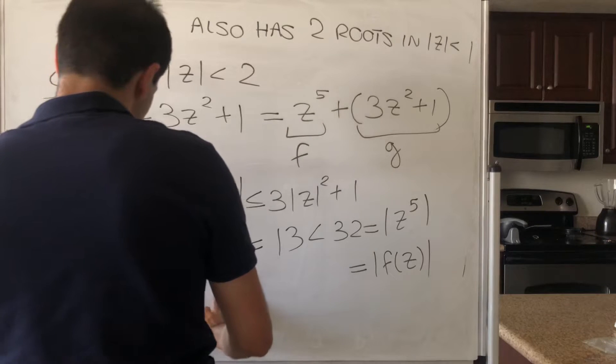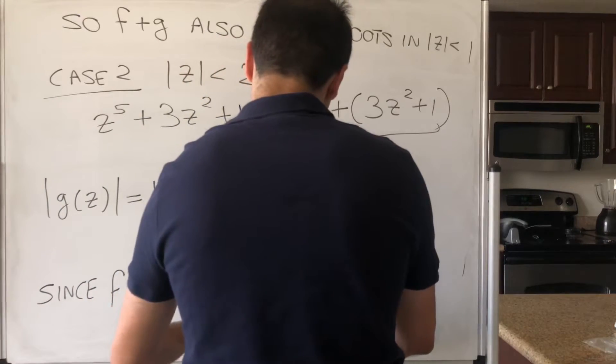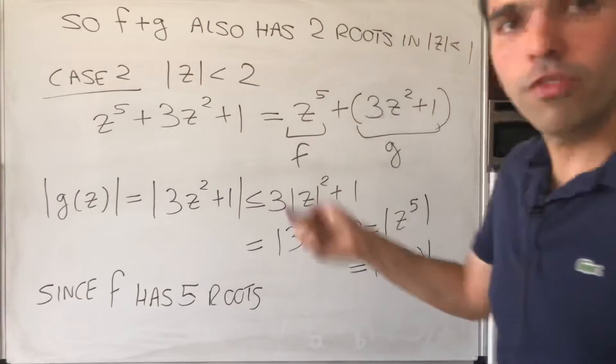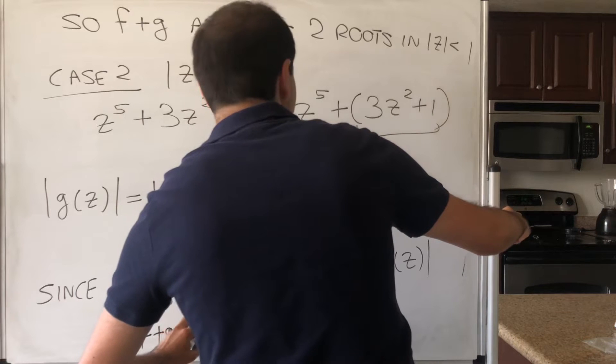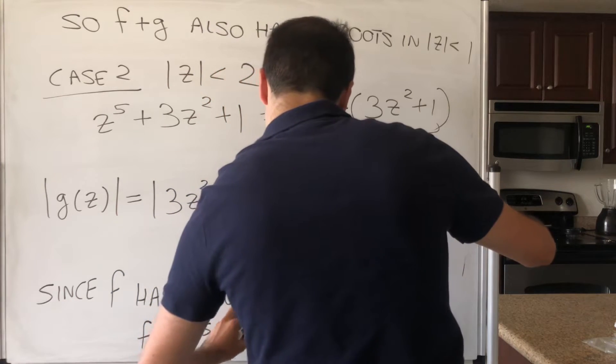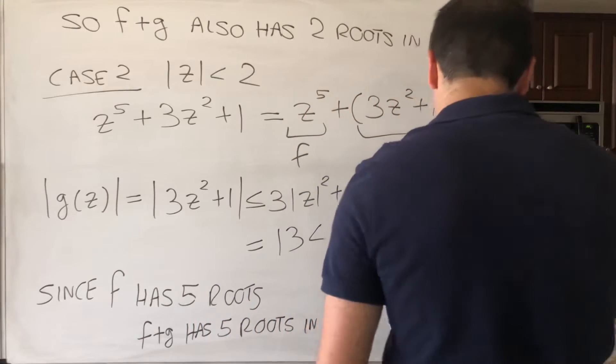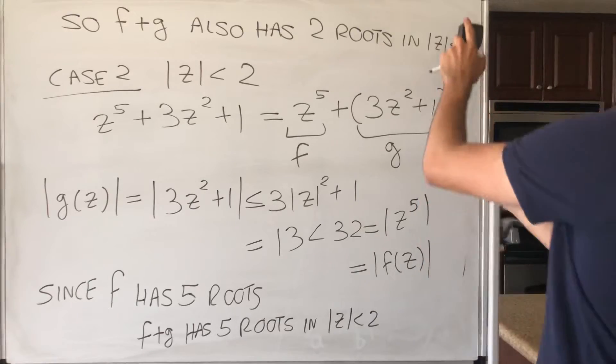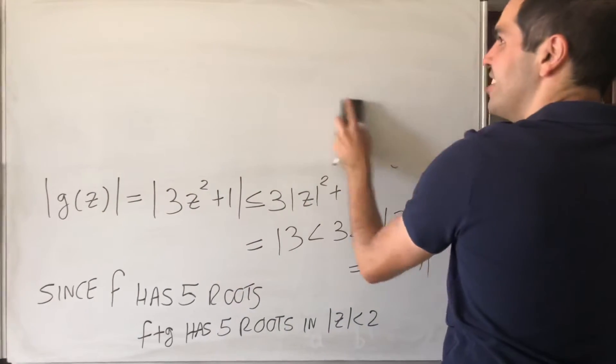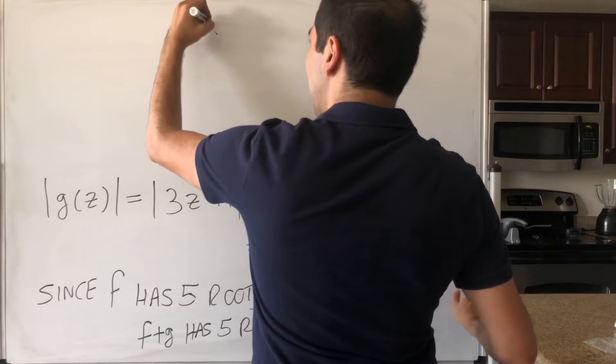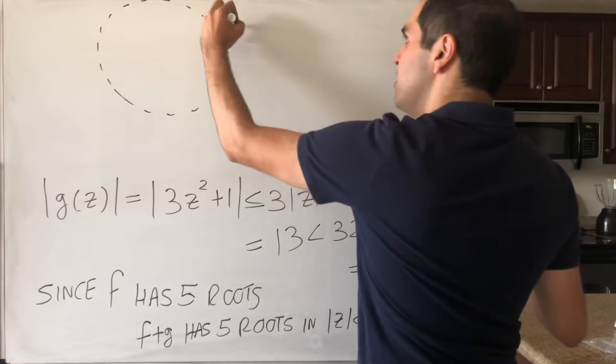So since F has 5 roots, technically just 0, but with multiplicity 5, we get F + G also has 5 roots in |z| < 2. Okay, so what have we found? And again, there is a little technicality which I'll address very soon. So we found that inside the big disk, |z| < 2,